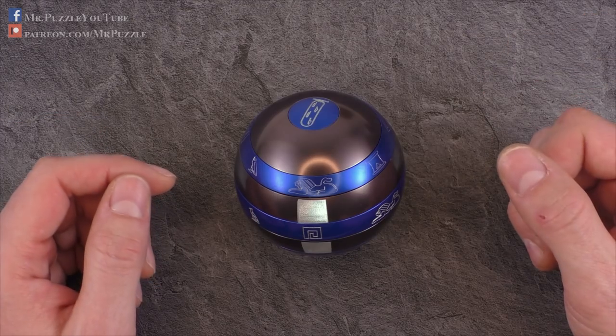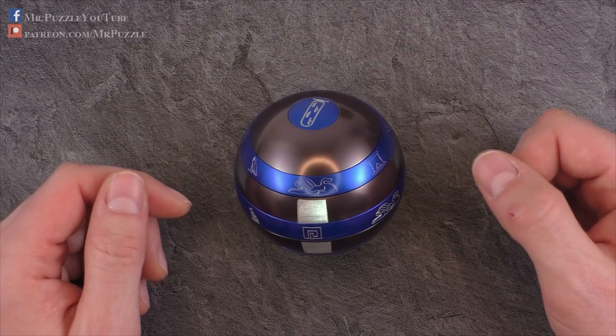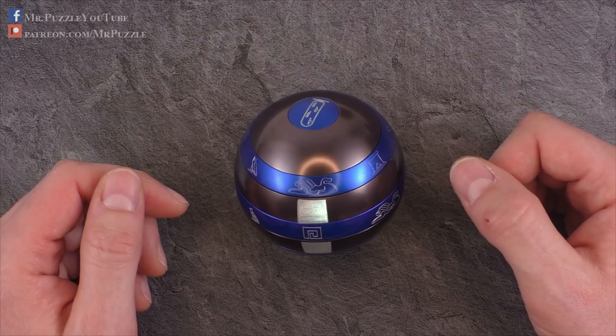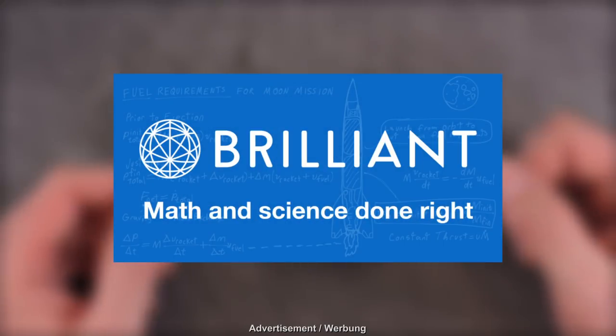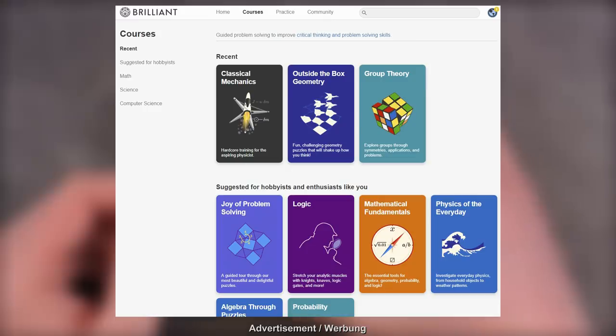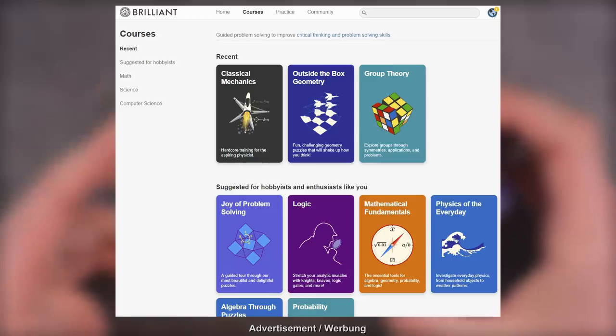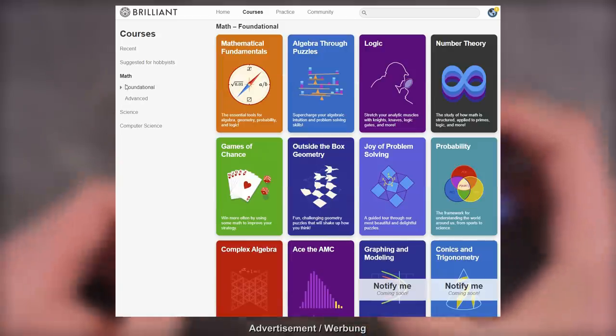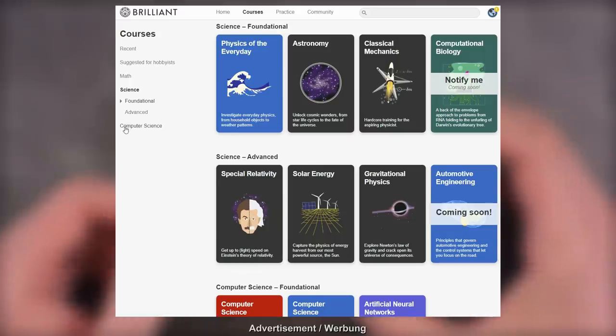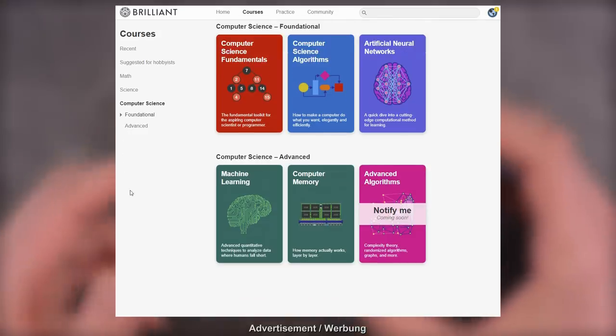And if you like watching videos about puzzles and enjoy my explanations about the mechanisms behind, I recommend you to check out Brilliant.org, who sponsored today's episode. Brilliant.org is a problem-solving website that teaches you how to think like a mathematician or a scientist. They offer you a huge amount of courses in the field of math, science, and computer science.